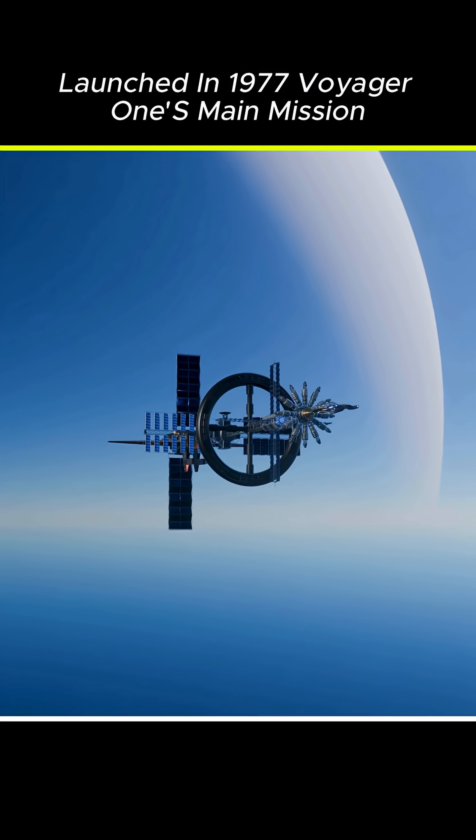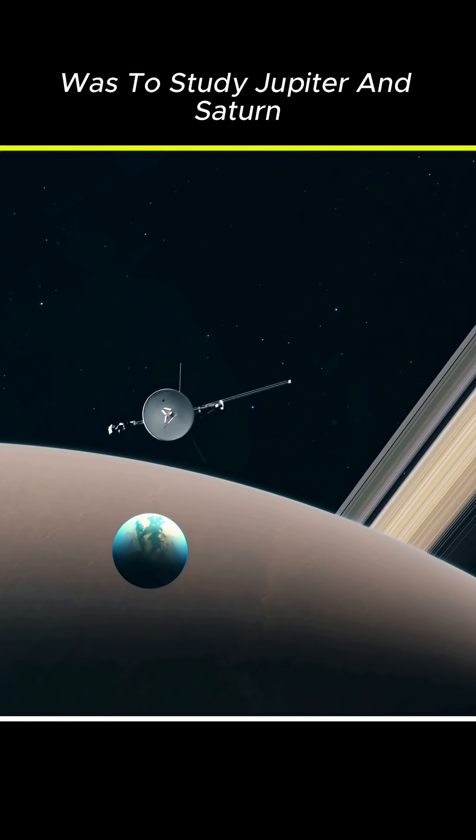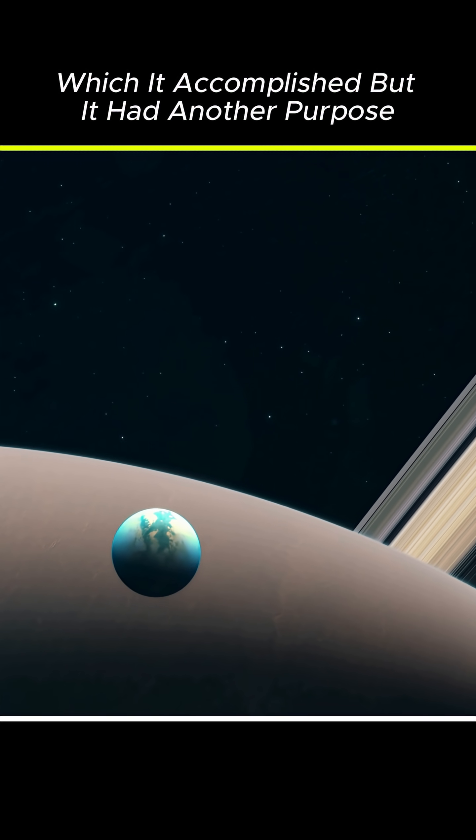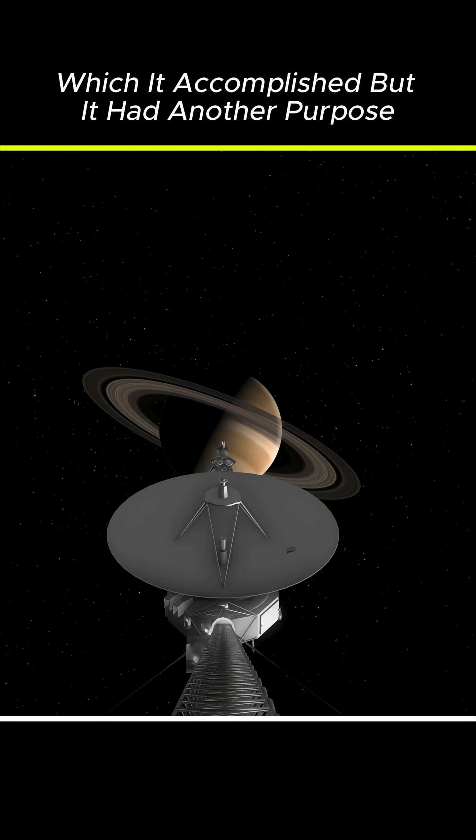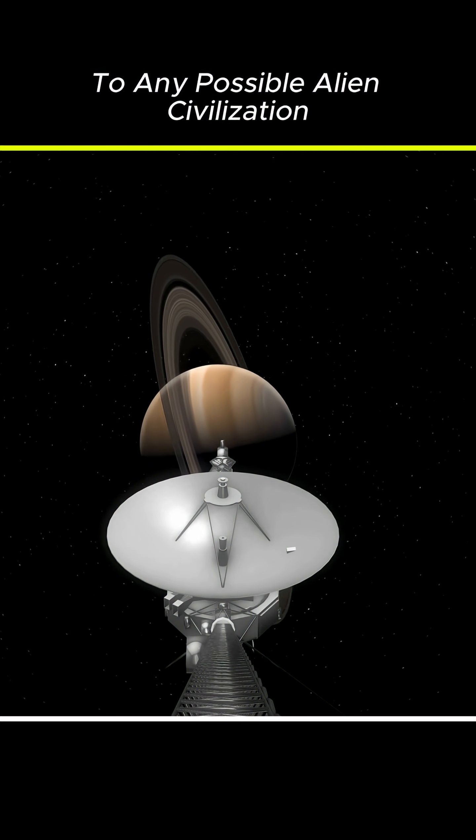Launched in 1977, Voyager 1's main mission was to study Jupiter and Saturn, which it accomplished. But it had another purpose: to deliver a message from Earth to any possible alien civilization.